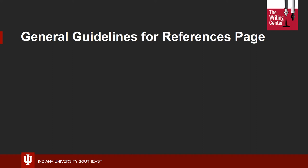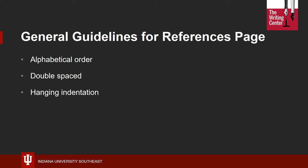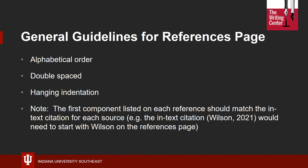Before we go into specifics about how to create citations for the references page, let's touch briefly on some general guidelines regarding setup and formatting. First, all of your references must be in alphabetical order; if you have multiple sources by the same author, base the order on the title of the article or book. Remember to double-space your citations just as you do the rest of your paper. You'll also need to use hanging indentation on your references page, meaning the first line of every citation is flush with the left margin and every subsequent line is tabbed over one time. You can set this up in the paragraph and spacing options in Microsoft Word. Finally, be aware that students often make the mistake of not ensuring that the first component listed on a citation matches what's in the in-text citation for that source.